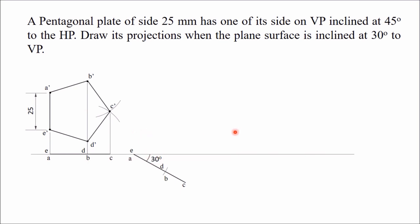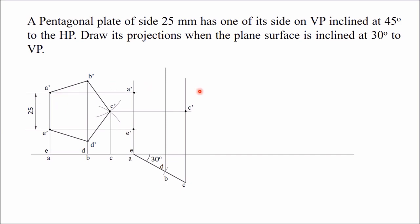This is the plane inclined at 30 degrees from VP. To get the front view, first draw vertical projectors from A and E, and draw horizontal projectors from A-dash and E-dash — they intersect at the respective new A-dash and E-dash points. Similarly draw vertical projector from C and horizontal projector from C-dash to get new C-dash. Draw vertical projectors from B and D and horizontal projectors from B-dash and D-dash to get new B and D points. Once you have all these points, join them in sequence: A to B, B to C, C to D, D to E, and E to A. This gives the front view in the second stage.